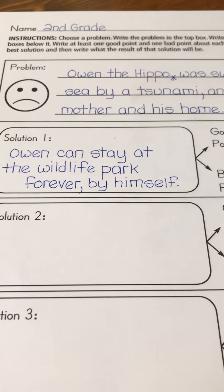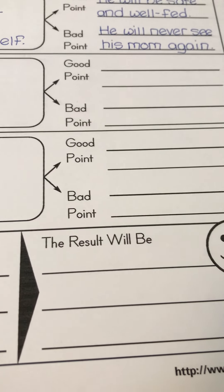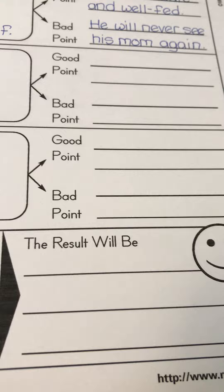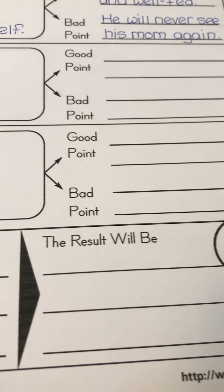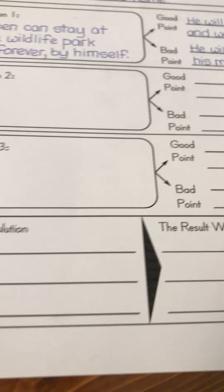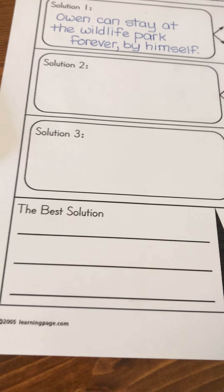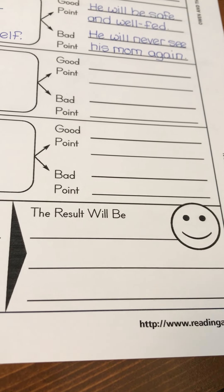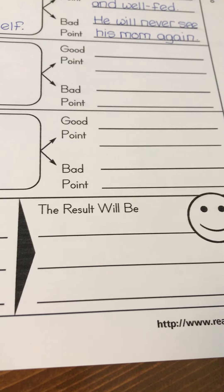For each of those solutions, you are going to come up with a good point — something good that can come from that solution — and a bad point — something bad that might happen with that solution. Then at the end, you're going to choose the best solution out of all three that you came up with and tell what you think the result will be, or what the story says the result will be.